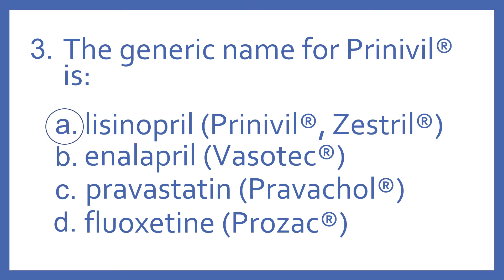And the answer is A — lisinopril is the generic name for Prinivil. It's also the generic name for Zestril as well. Enalapril is the generic name for Vasotec, and both of those are ACE inhibitors for high blood pressure. You can tell that by the '-pril' suffix.